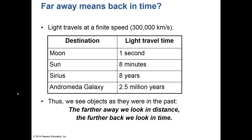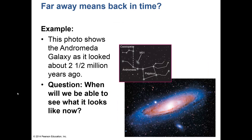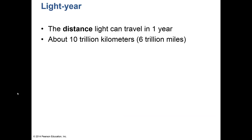The farther back we look in distance, the further back in time we are. The Orion Nebula, a large winter constellation, is 1,500 light years away, so we're seeing it as it looked 1,500 years ago — those stars may not even be there anymore. The Andromeda galaxy we see today is how it looked two and a half million years ago, and we won't be able to see what it looks like now for another two and a half billion years. A light year is about ten trillion kilometers or six trillion miles.